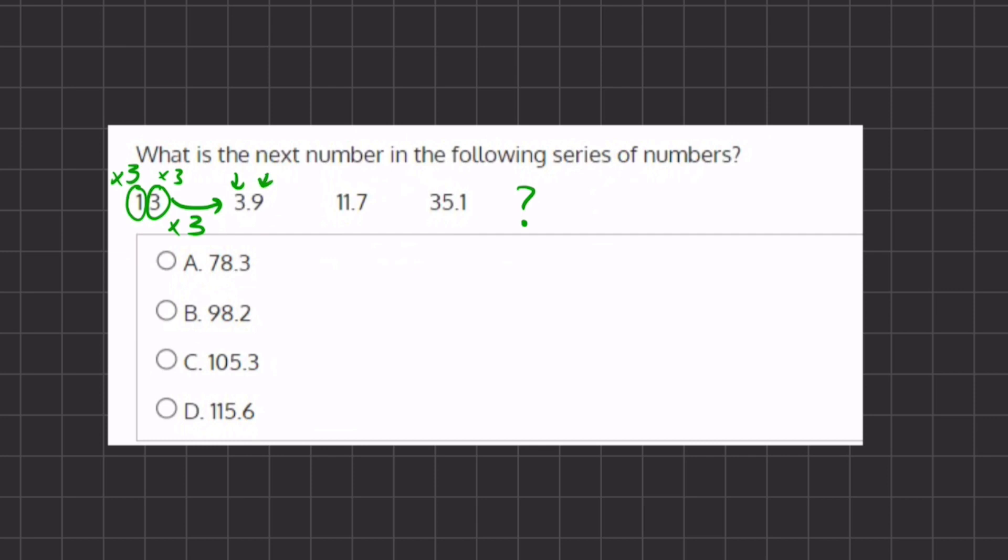which is right over here. Alright, so if we continue this pattern, 3.9 times 3 gives us 11.7. And you can also see this by multiplying 3 times 3 and adding it to 3 times 0.9. So 3 times 3 gives us 9, plus 3 times 0.9 gives us 2.7.